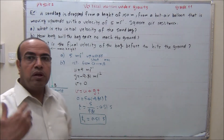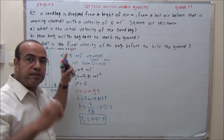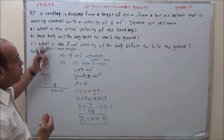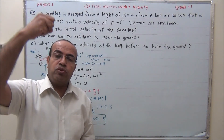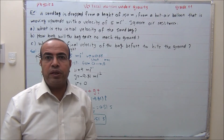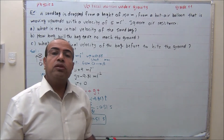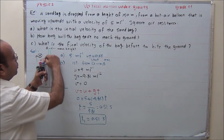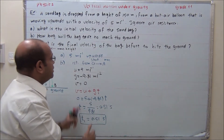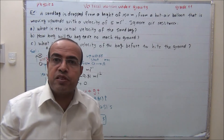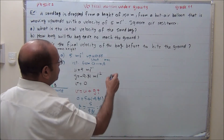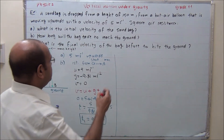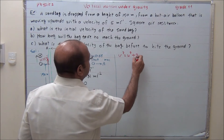For the second stage from maximum height, the initial velocity at A is zero — the object is at instantaneous rest. The acceleration due to gravity going downward is positive 9.81. We don't have any other givens, so we need the displacement from O to A. We have U, G, and V, so we use the formula V squared equals U squared plus 2GS to find the displacement.